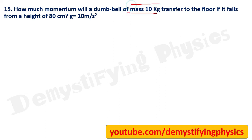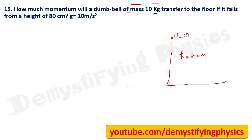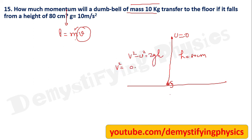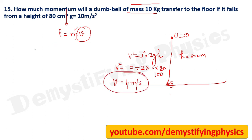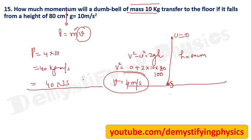A dumbbell of given mass is dropped from a height of 80 cm. Initial velocity is zero. Find the velocity just before hitting the floor using v² = u² + 2gh: v² = 0 + 2 × 10 × 0.8 = 16, so v = 4 m/s. Momentum transferred to the floor = mass × velocity = 10 × 4 = 40 kg·m/s, which can also be written as 40 N·s.